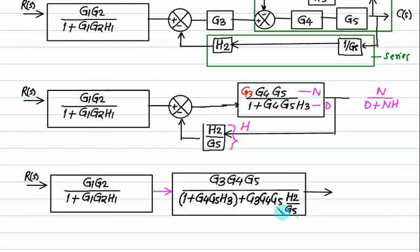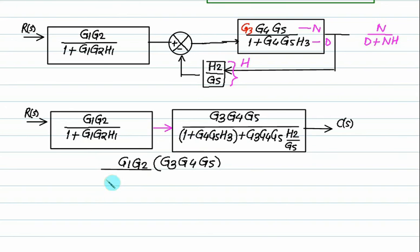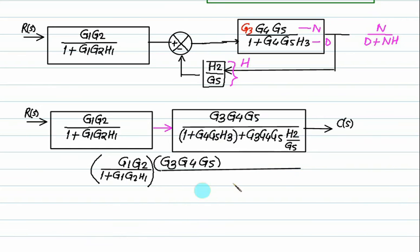Then sign is plus. Then you have to write down the numerator of this term: that is G3·G4·G5 multiplied by feedback. The concept of feedback is not for the H value — it is only applicable for the G value. So this one is H2 divided by G5. Next, G5 and G5 will cancel out. And finally these two blocks are in series, so we have the transfer function. Writing the final value: G1 multiplied by G2 multiplied by this function, divided by 1 plus G1·G2·H1, divided by the second bracket as it is.